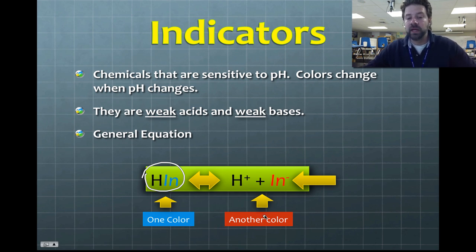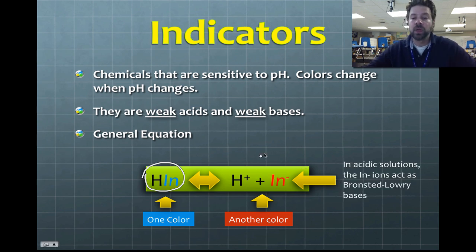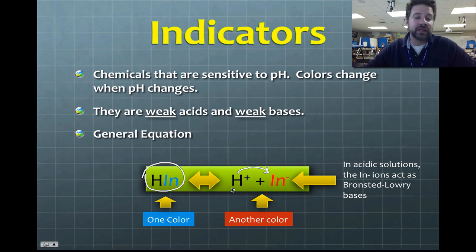We can cause this reaction to go right or left depending on what liquid we put the indicator into. In acidic solutions, the indicator ions act as Brønsted-Lowry bases, meaning they accept H+ ions. If the indicator accepts the H+, the reaction swings to the left, forming H bonded to the indicator and giving a blue color.